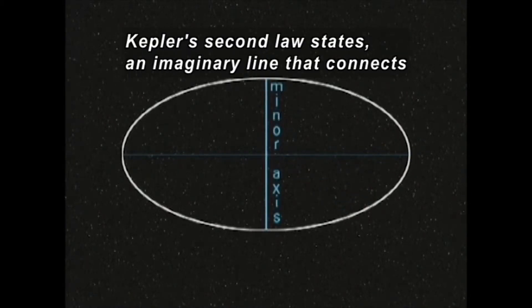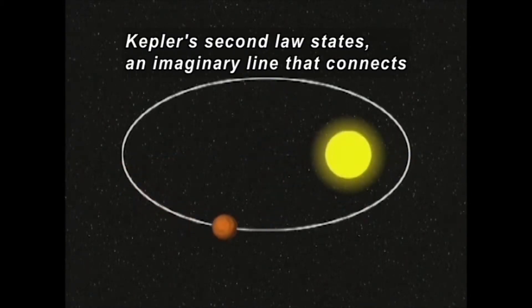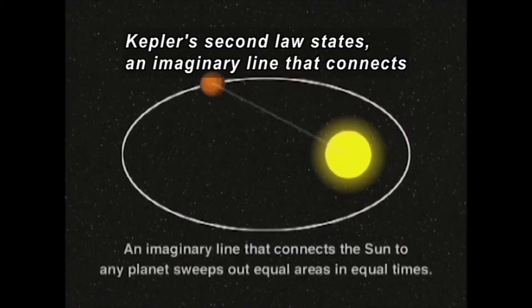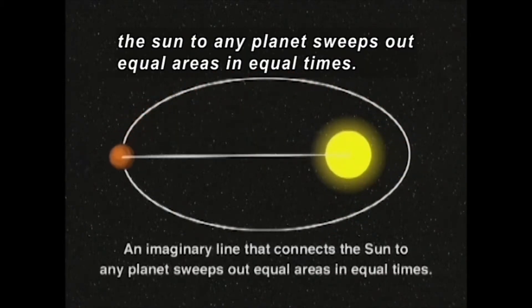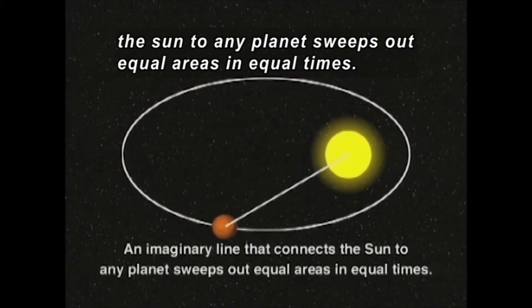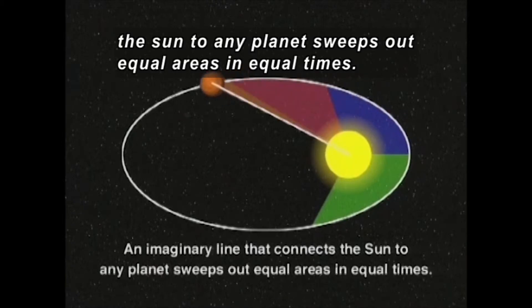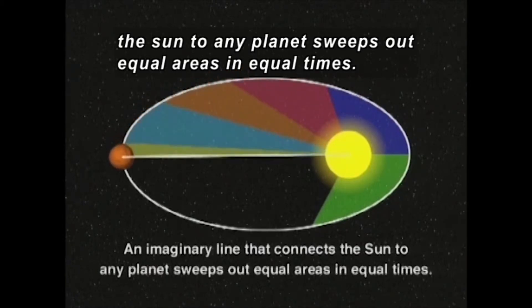Remember this? Kepler's second law states that an imaginary line that connects the sun to any planet sweeps out equal areas in equal times.